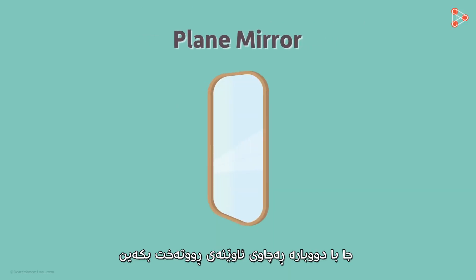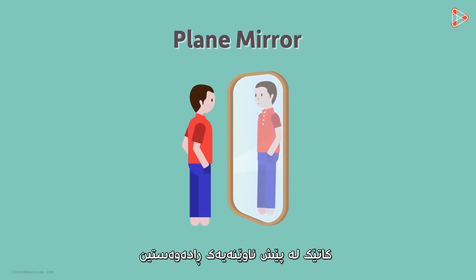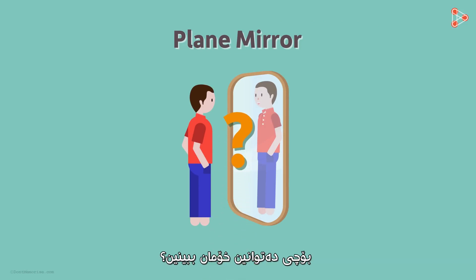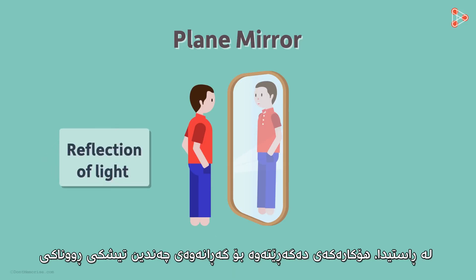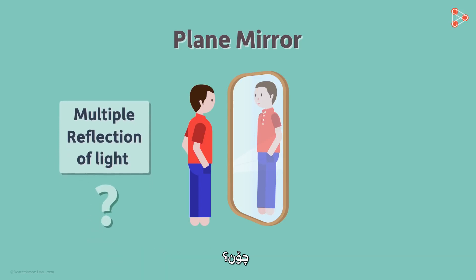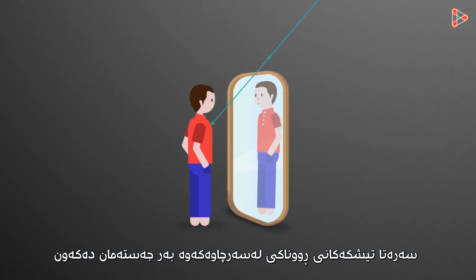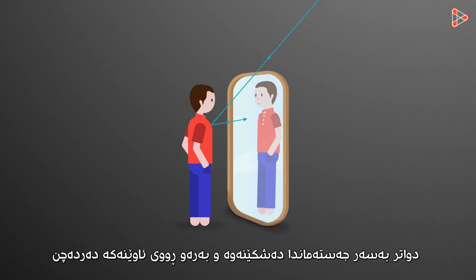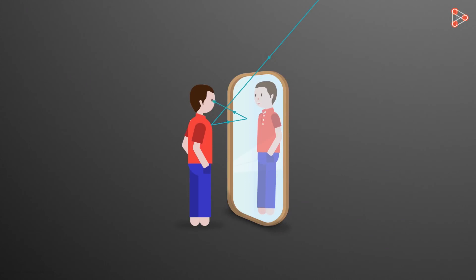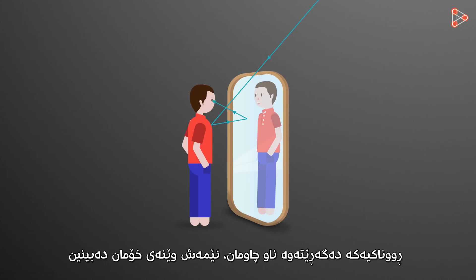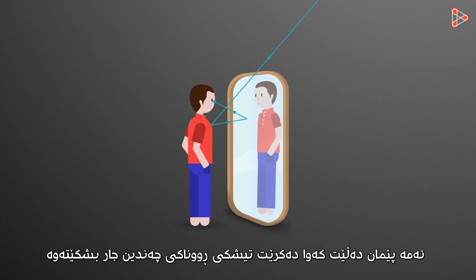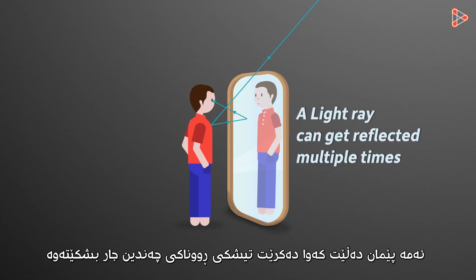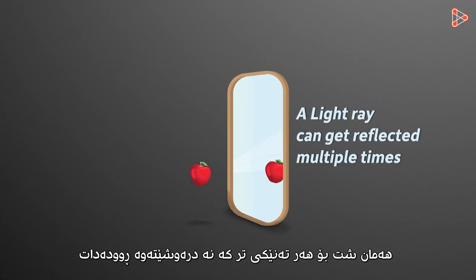So let's consider this plain mirror again. When we stand in front of a mirror, we see an image of ourselves in the mirror. Why are we able to see our image? It's due to the reflection of light — in fact, it's due to multiple reflections of light rays. The light rays from the source are first incident on our body. They bounce off from our body and fall on the surface of the mirror, and again get reflected from there. This reflected light then reaches our eyes and we see our image. This tells us that a light ray can get reflected multiple times. The same thing happens for every other non-luminous object as well.